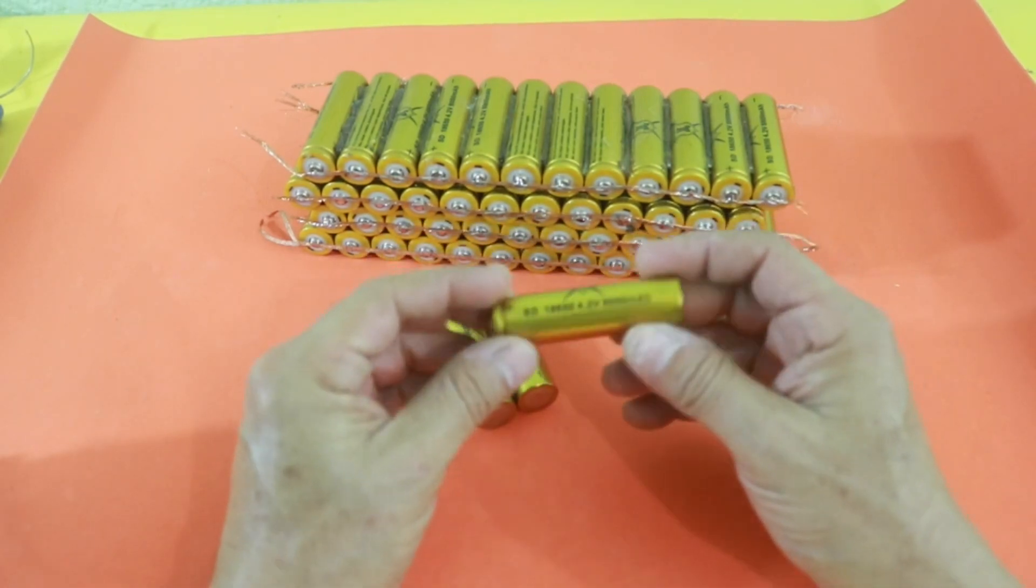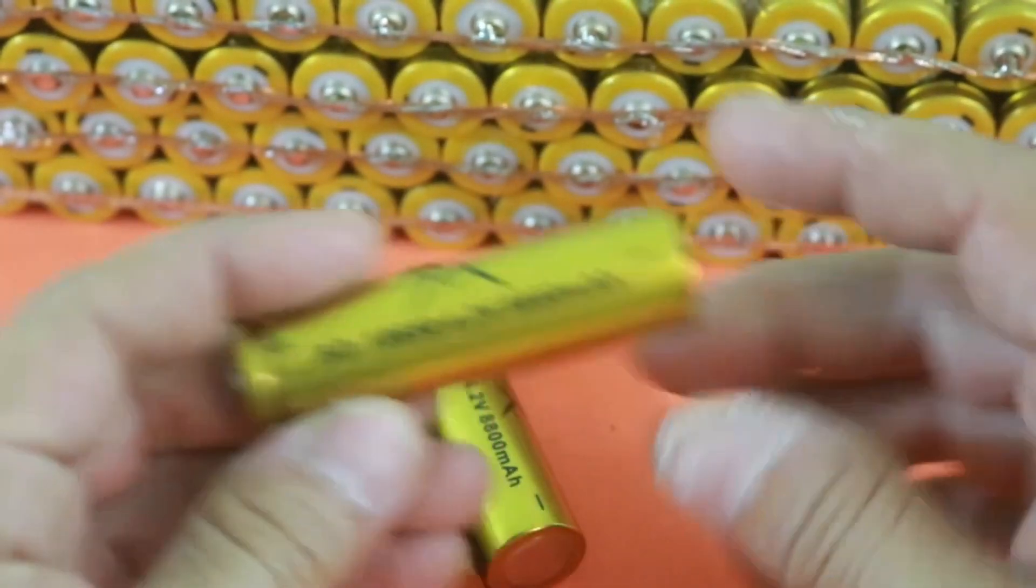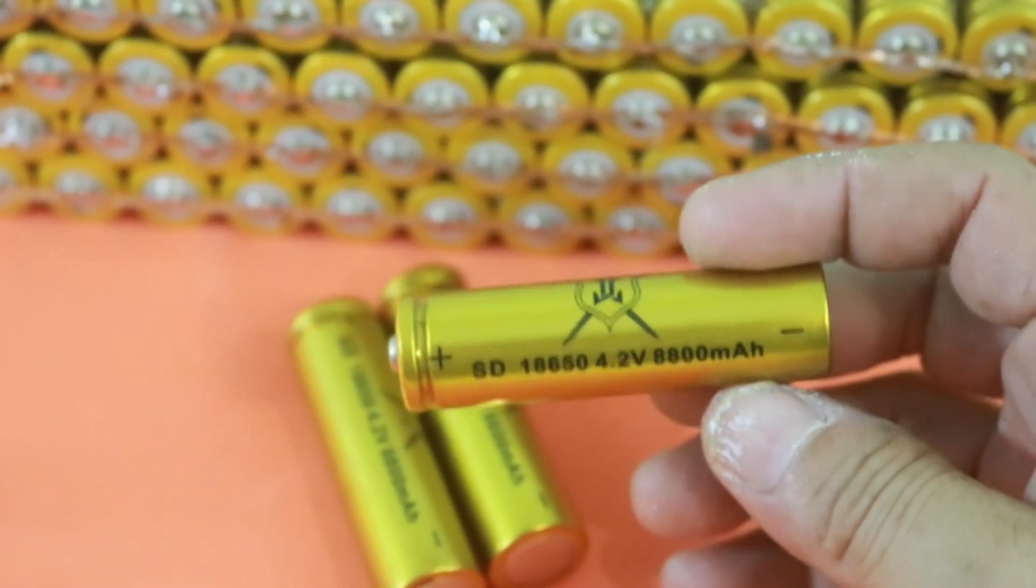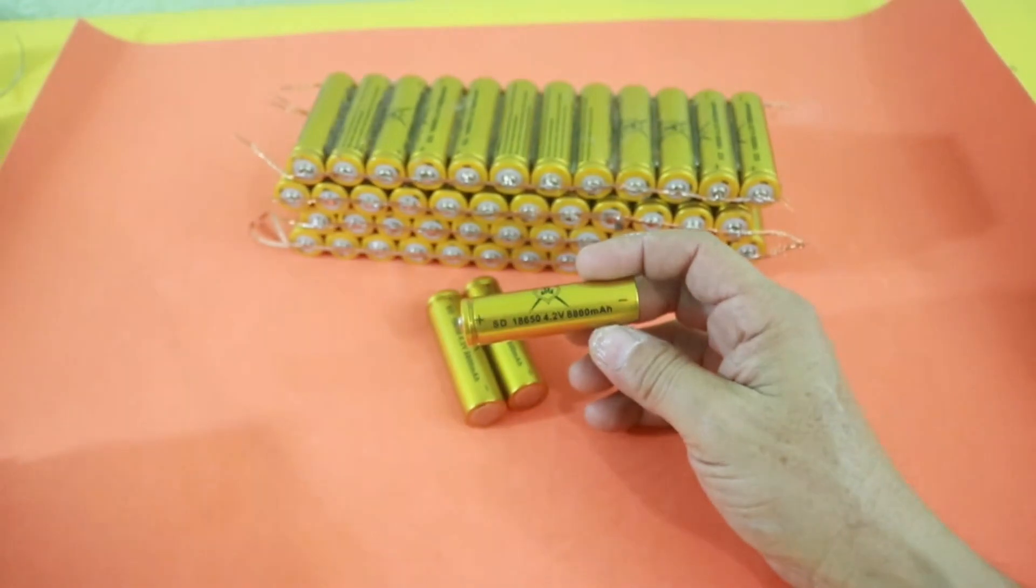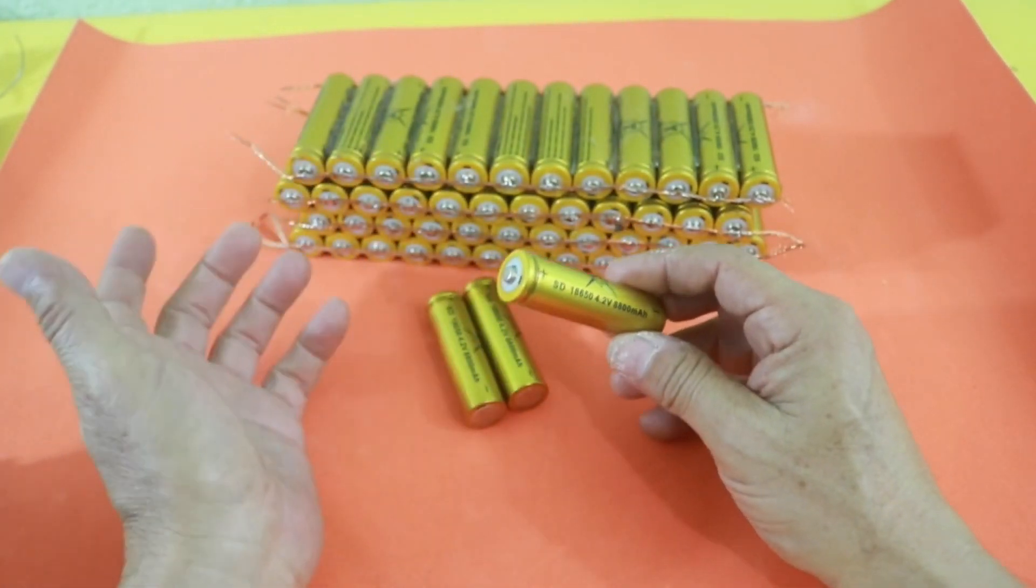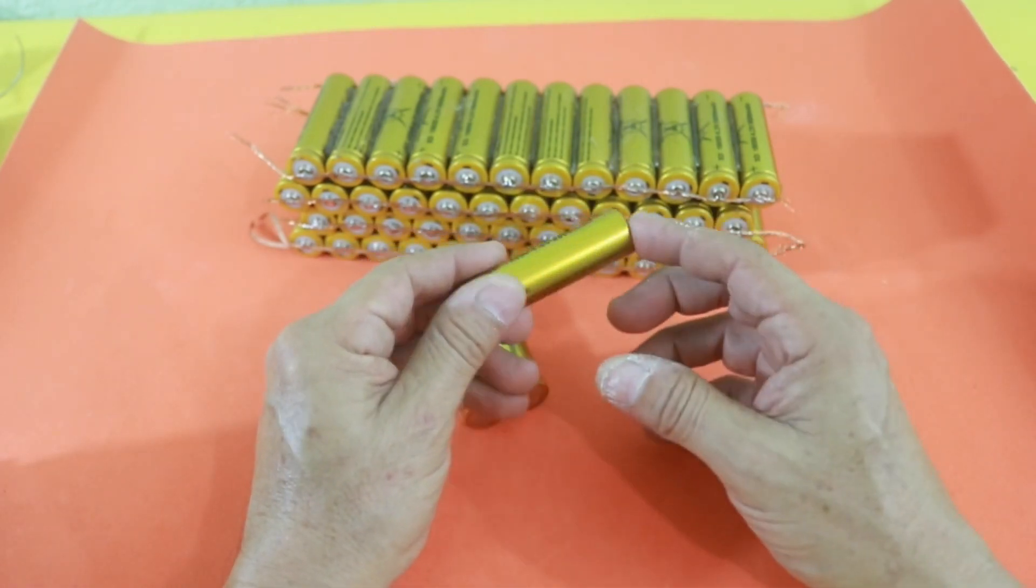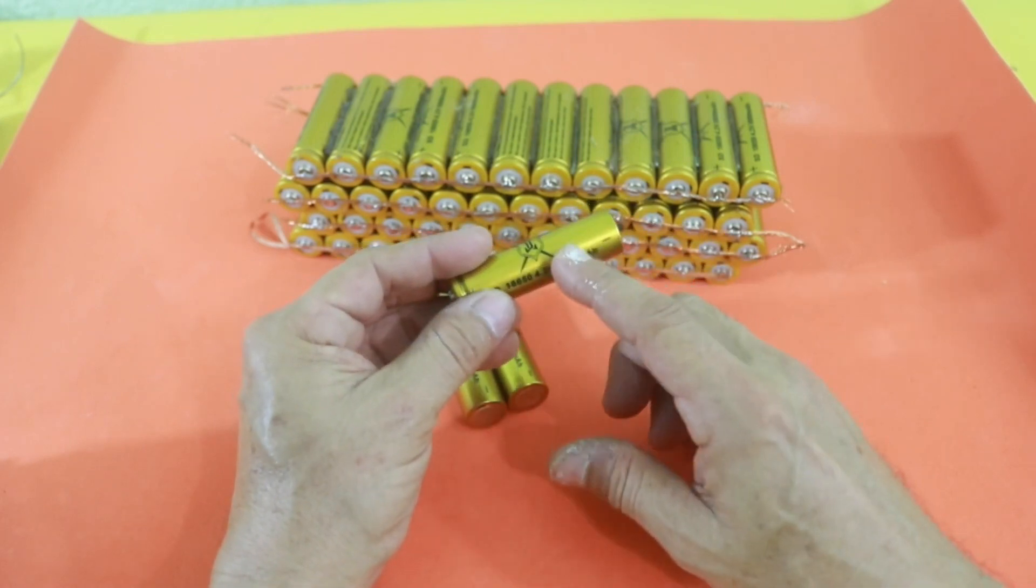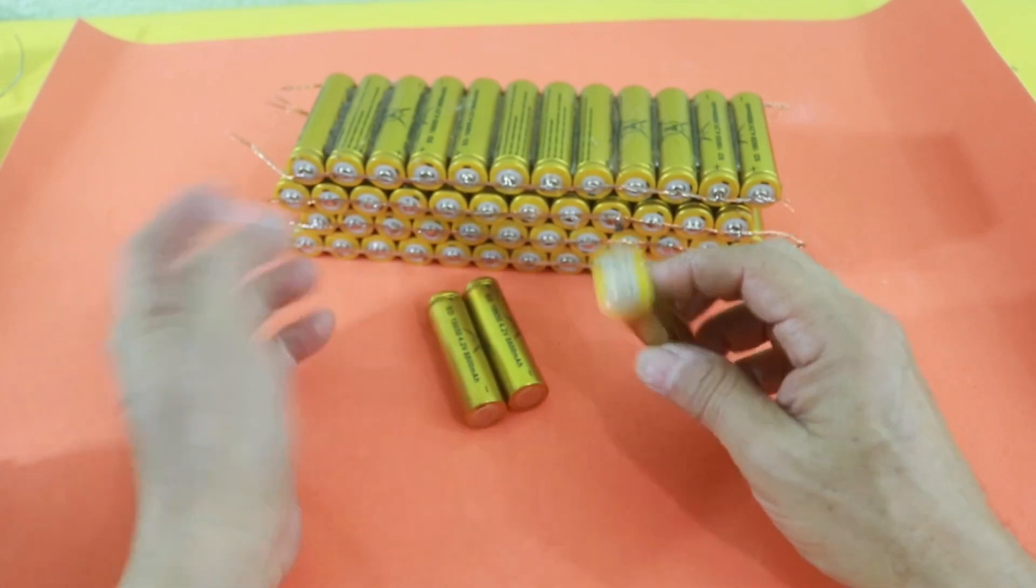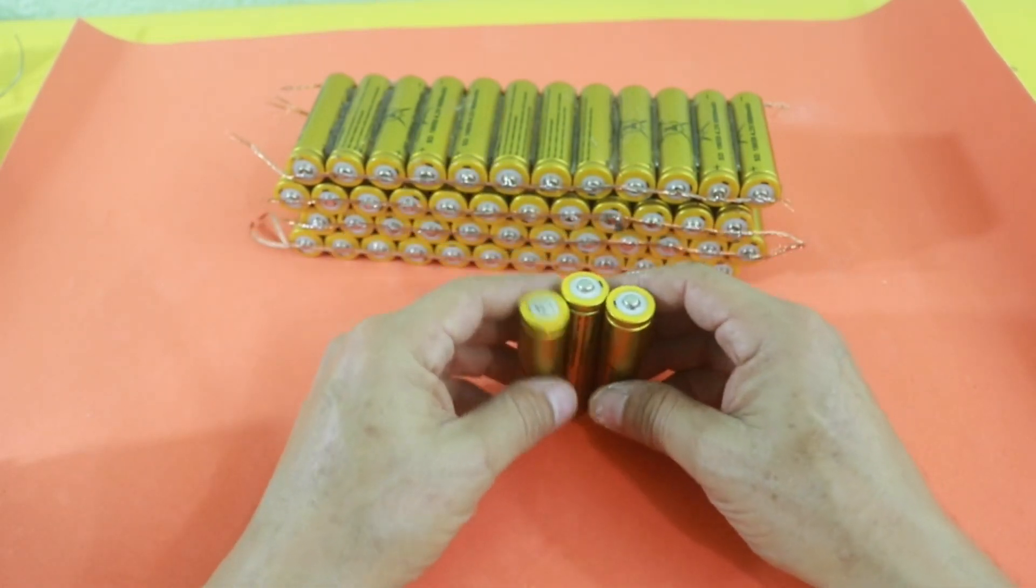Of course these batteries are not very good. They are advertised as having 8800 milliamp hours which is not true. Even the best batteries have a maximum capacity of around 3500 milliamp hours, but I checked them in the battery analyzer and the real capacity of these cells is around 500 to 600 milliamp hours. But they do work, so I decided to make something useful out of them.